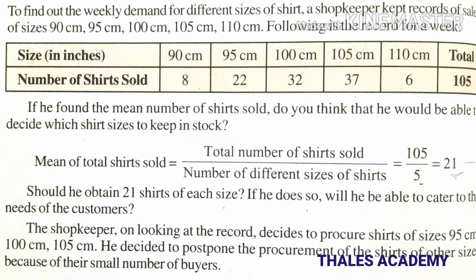If the shopkeeper found the mean number of shirts sold, do you think he would be able to decide which shirt sizes to keep in stock? Mean of total shirts sold equals total number of shirts sold divided by number of different sizes of shirts — that is 105 divided by 5, which equals 21. Should he obtain 21 shirts of each size?